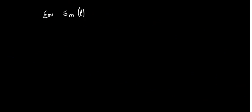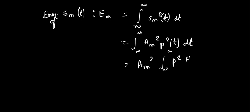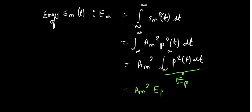Now let's find the energy of signal s_m(t). We know energy is given by E_m = integral of s_m²(t) dt. Substituting s_m(t) = A_m · p(t), since A_m is constant we can take it outside. We are left with A_m² times the integral of p²(t) dt, which is the energy of the pulse E_p. So in compact notation: E_m = A_m² · E_p.